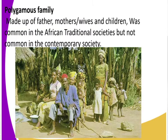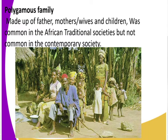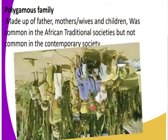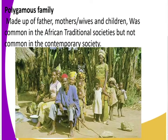Now let's look at the polygamous family. It is made up of a father, mothers — or wives — and children. A man has several wives. In the previous society it was very common, but today it is very uncommon. Look at that polygamous family image — there is a husband and around five wives. That is a polygamous family, plus children.